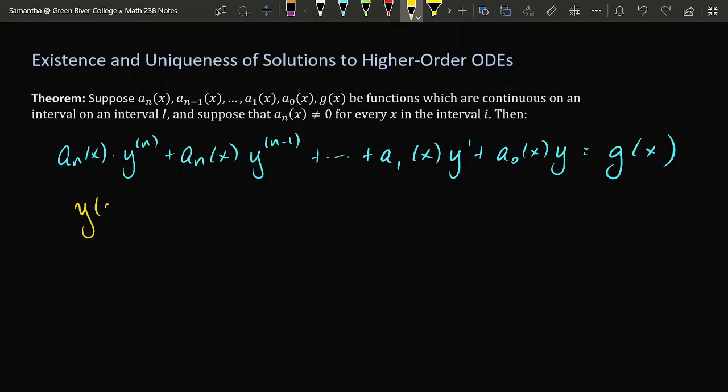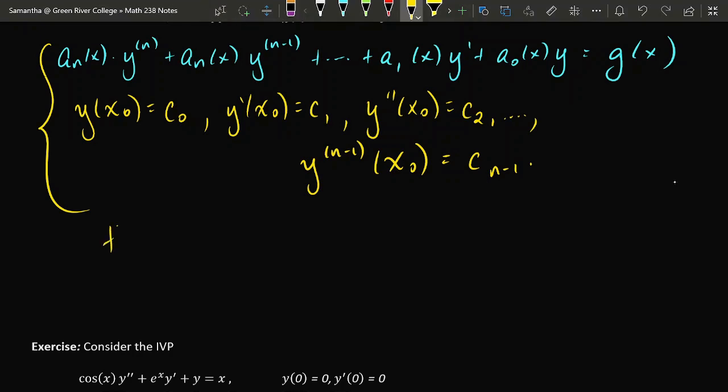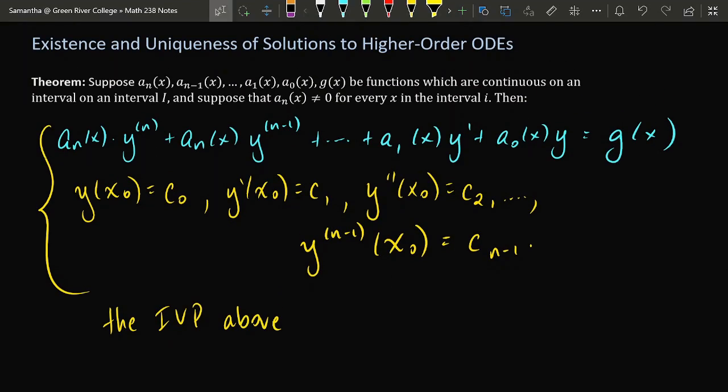We'll also have some initial conditions. So we'll require that y outputs some set value when we plug in an initial x, x₀. We require that y' outputs some specific value. We'll require that the second derivative outputs some specific value, and so on and so forth, until we get to the (n-1)st derivative. If we have this initial value problem, how do we know whether or not this initial value problem has a solution, and whether or not that solution is the only one?